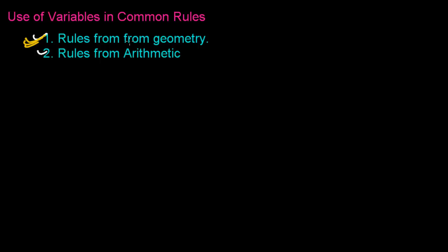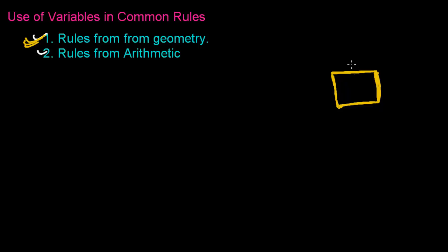Let me give you a very quick example. I'll make a geometrical shape — a square. I hope you know what a square is. A square is a geometrical shape which has four closed sides and all sides are equal. I already told you all sides are equal — this side, this side, this side, this side — all sides are equal. So let's say the length of each side is L, so all four sides are L.